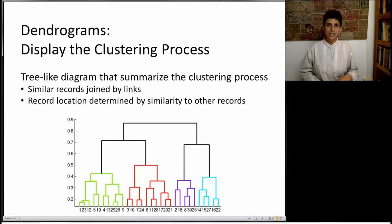The dendrogram is a tool to display the clustering process. It's also very useful to show other people the results of your analysis. What it is, it's a tree-like diagram that summarizes the clustering process. The idea is that we're going to have all our records marked on the x-axis, and the y-axis is going to be a similarity or a distance measure.